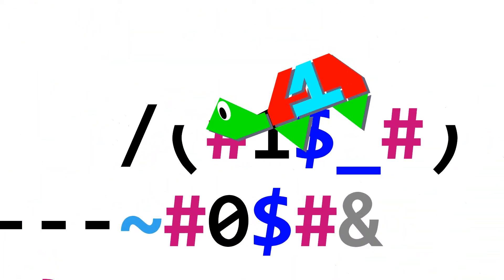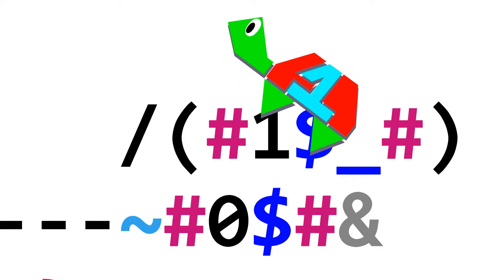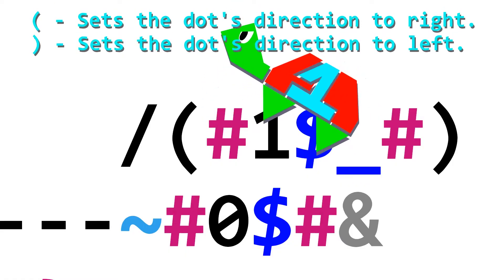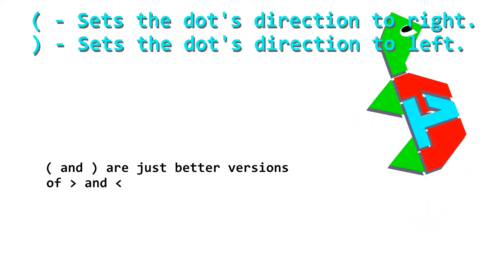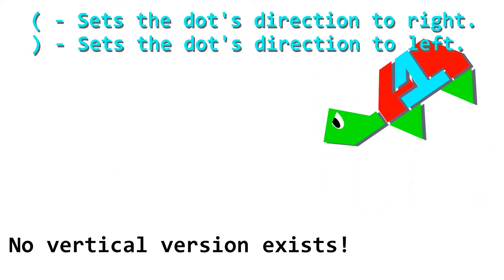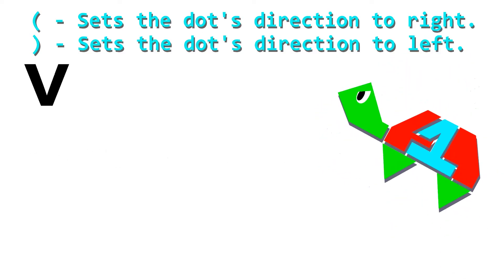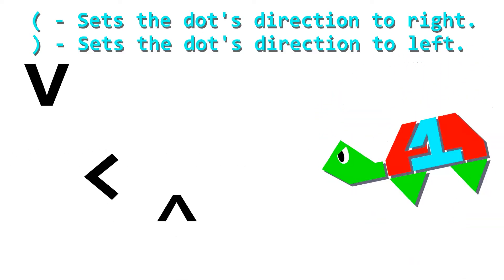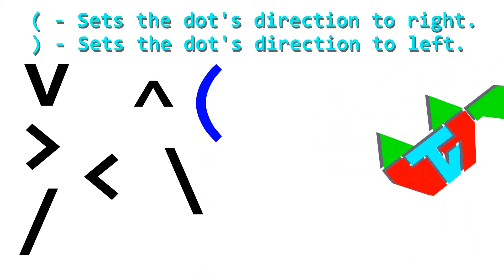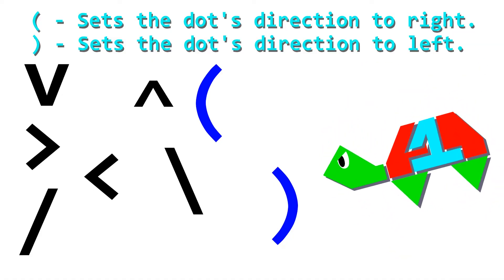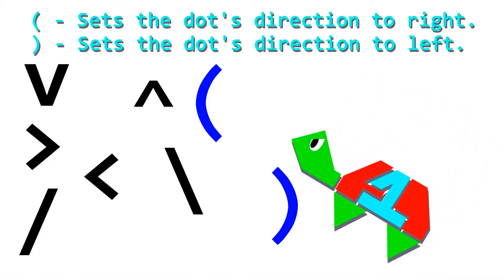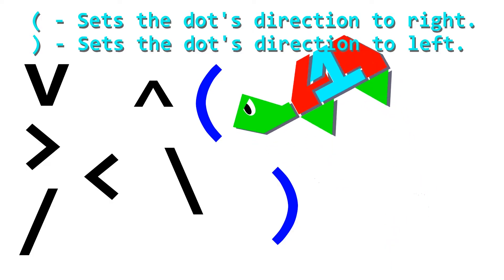The parentheses do this exact feature we are looking for, which is nice, except that it would completely get rid of the need for the left and right Befunge arrows, does not have a vertical counterpart, and adds to the amount of commands that are just used to move dots around the track. Seriously, why are there so many commands dedicated to determining how the dot moves along the track?